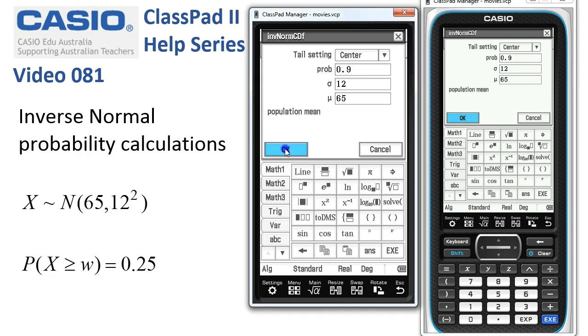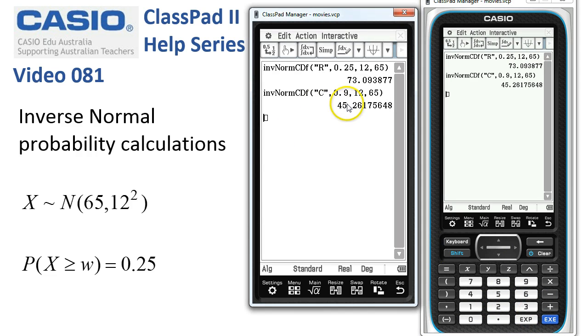When we tap OK now, it's only returned the lower value of the central 90%. If we'd performed this in statistics then we'd have got the lower and the upper value.